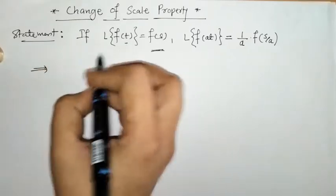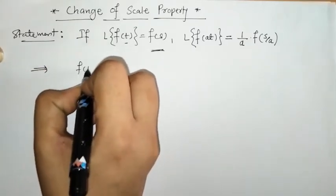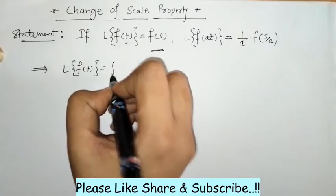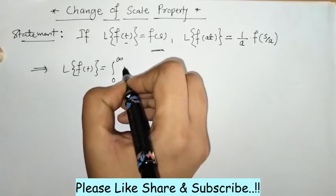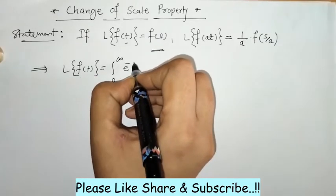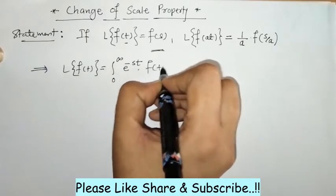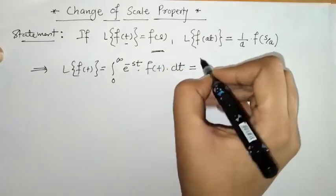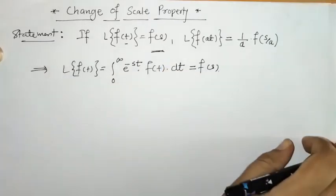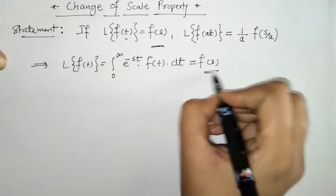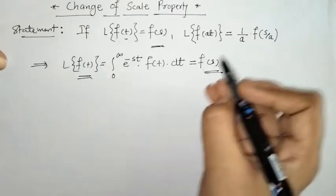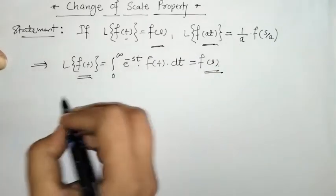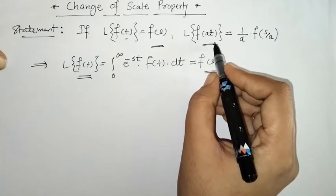Now we have to prove this statement. We are given that the Laplace of f(t) is F(s), and we know we can find its Laplace using the definition: the integral of e^(−st) f(t) dt. This F(s) is the Laplace of f(t). Now we have to find the Laplace of f(at), so we apply the Laplace transform definition on f(at).